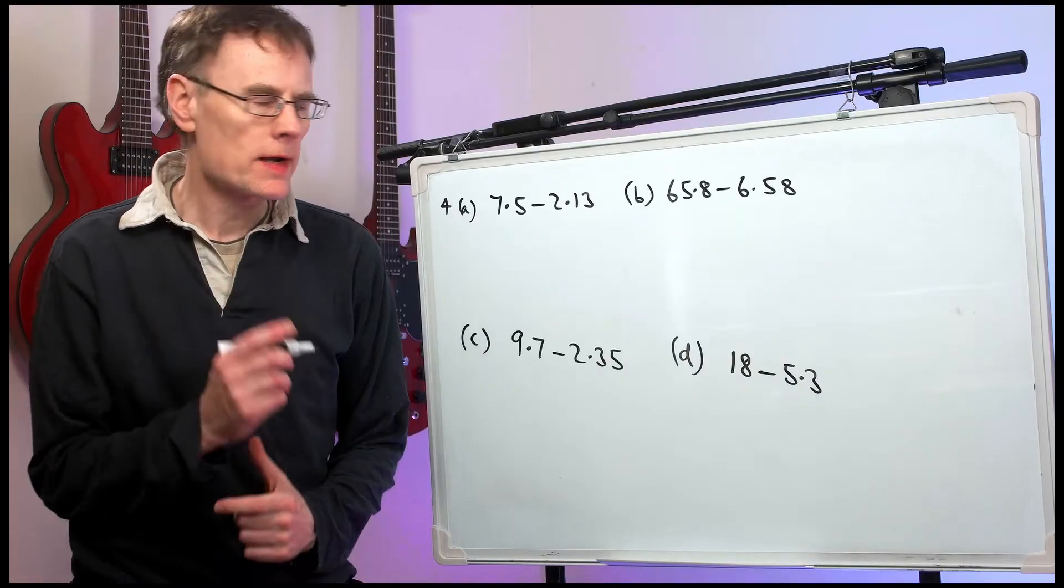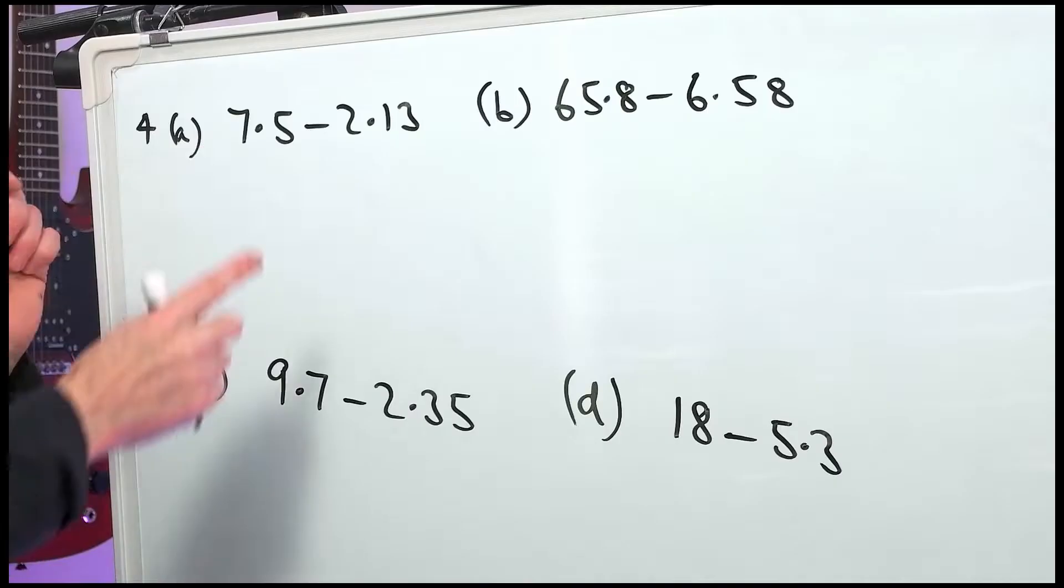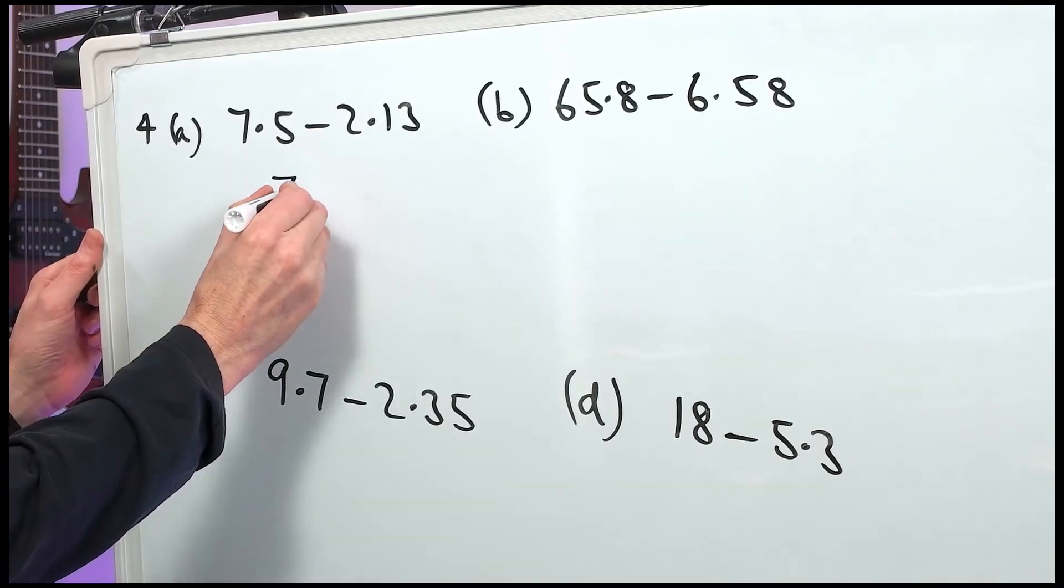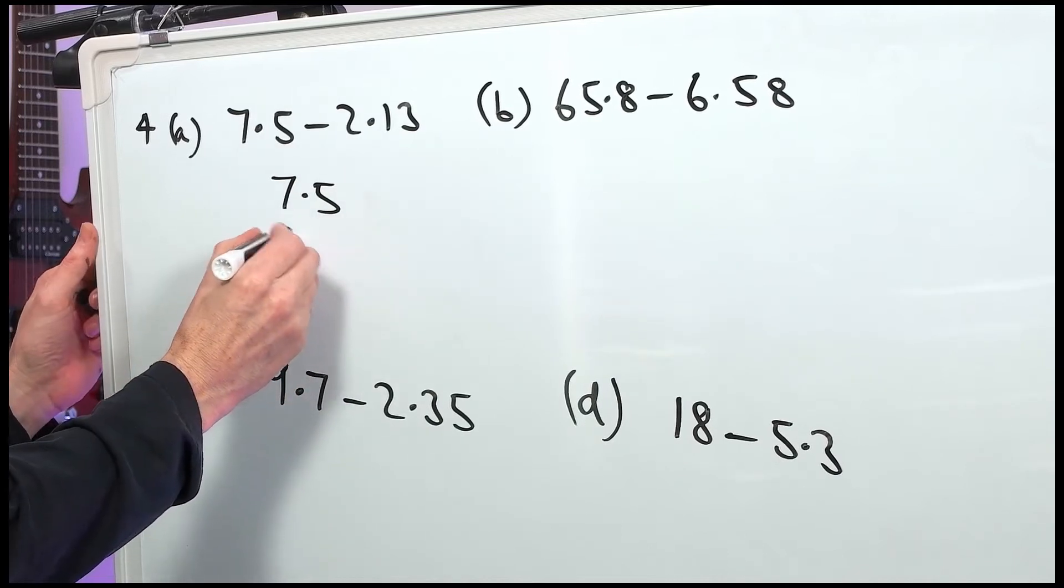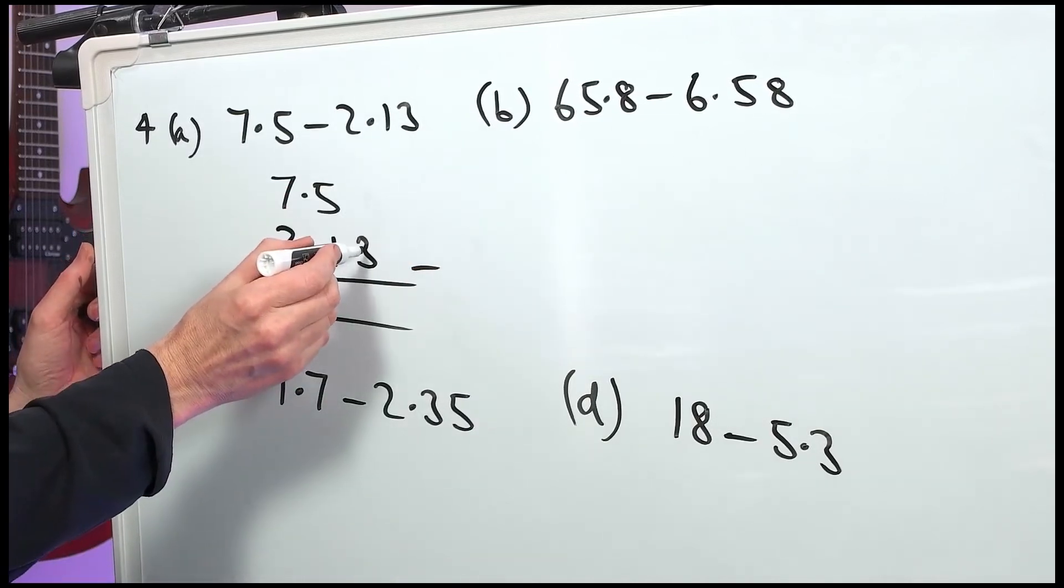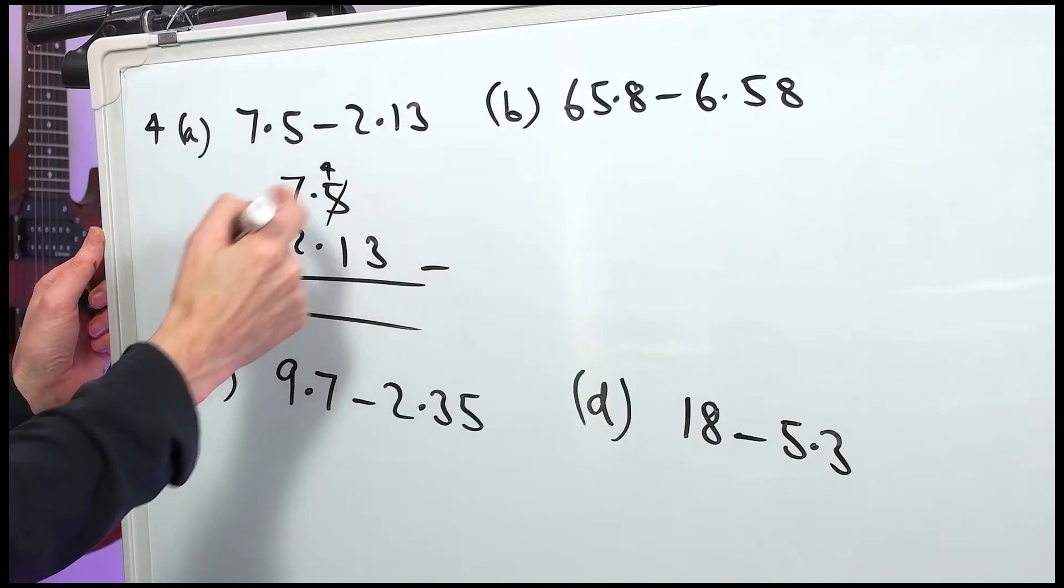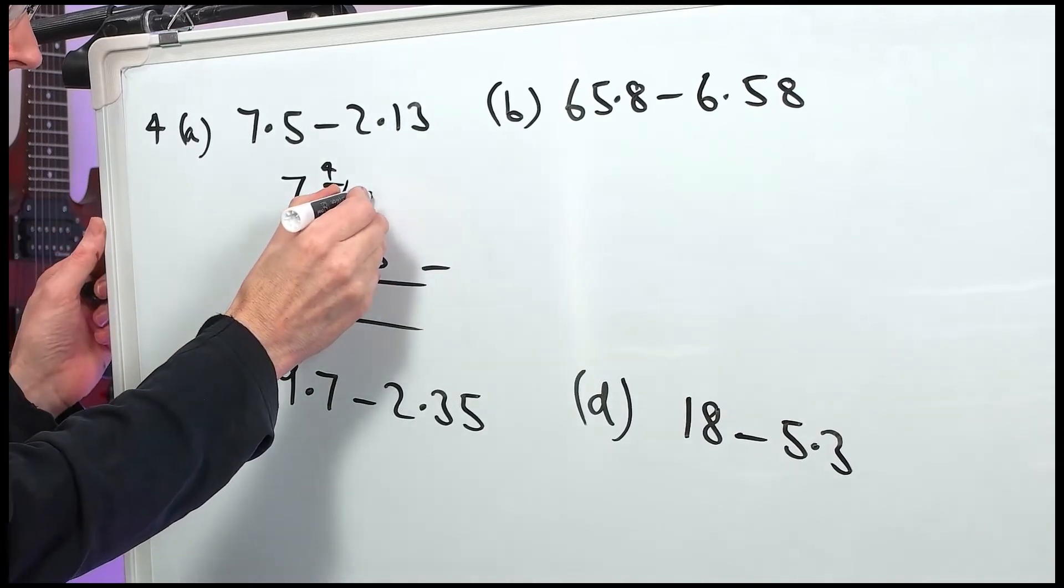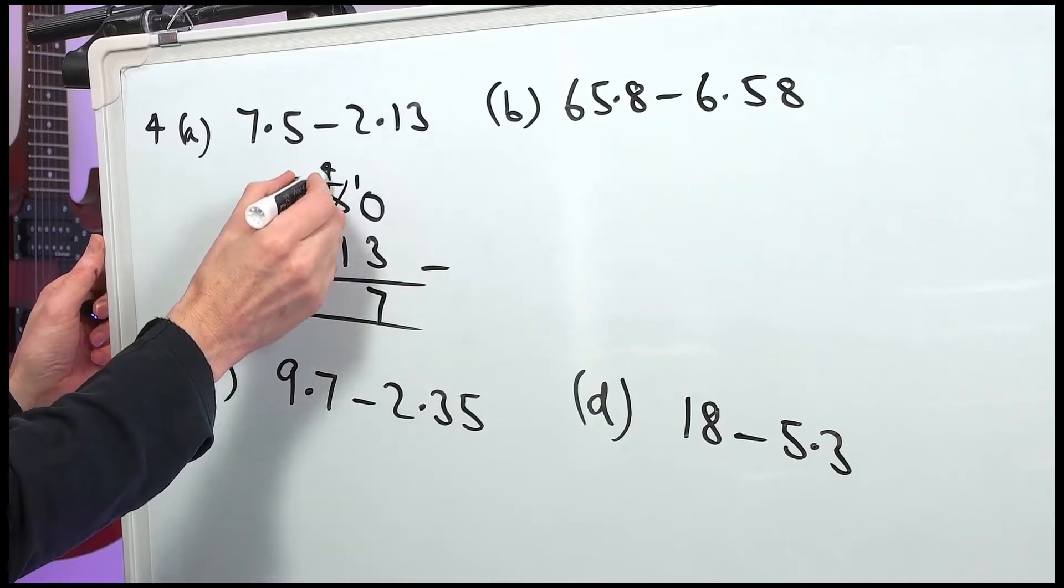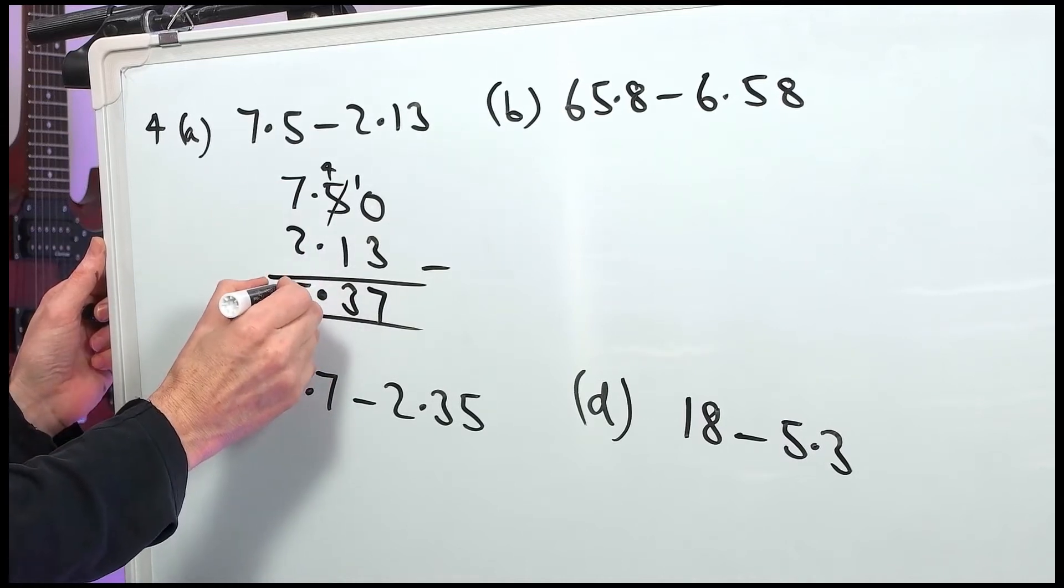Now, question number 4. We're subtracting decimals. The first thing to realize is you must do them the right way round. You can't swap the order round. We're starting with 7.5 and we're taking away 2.13. So, 7.5 must go on top. Minus 2.13. Lined up in the correct columns. Now, nothing take away 3, you can't do. So, you have to go next door and steal one from the 5 to leave 4. But, what's there? There's nothing there. We must have a zero in that column. So, we put the 1 here. Now, we have 10 take away 3 is 7. 4 take away 1 is 3. Decimal point. 7 minus 2 is 5. 5.37.